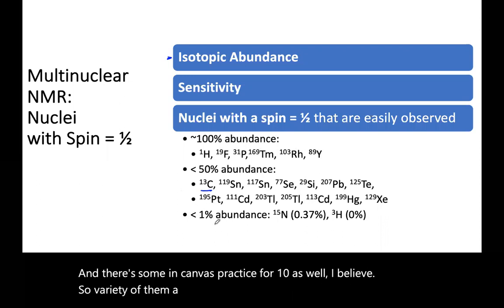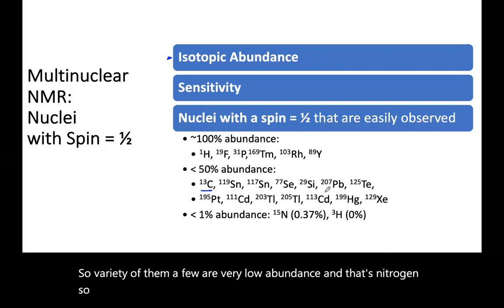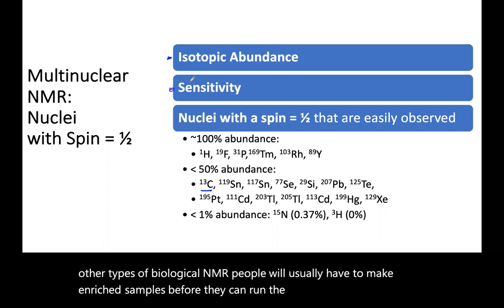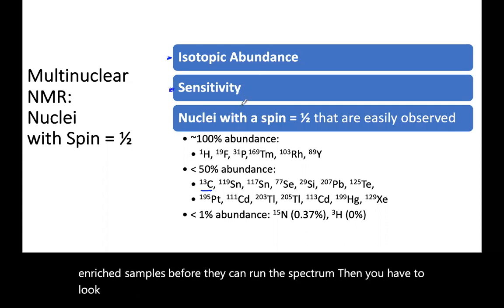A few are very low abundance, and that's nitrogen. So you'll see in nitrogen NMR, if you move on and do the 3D NMR or other types of biological NMR, people will usually have to make enriched samples before they can run the spectrum. Then you have to look at sensitivity. Some nuclei are not very sensitive.